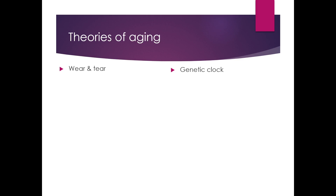There are really just two main theories for why we age and why ultimately we have a limited lifespan. The first one is known as the wear and tear theory, and the second one is known as the genetic clock theory.